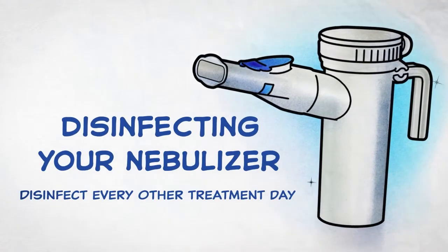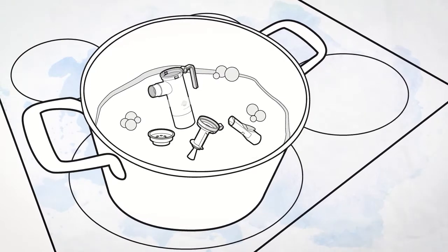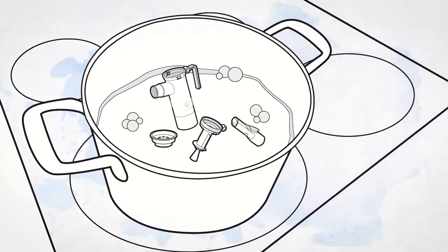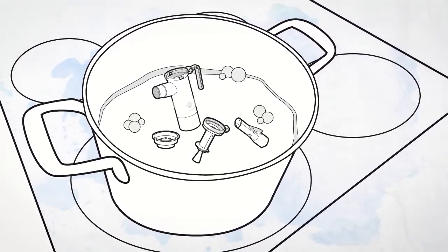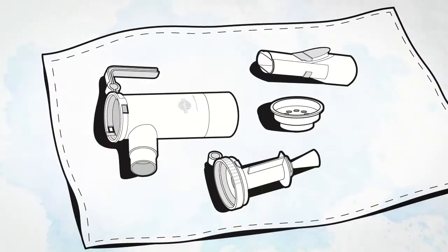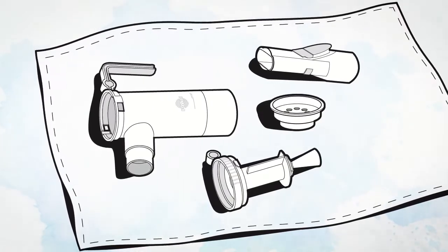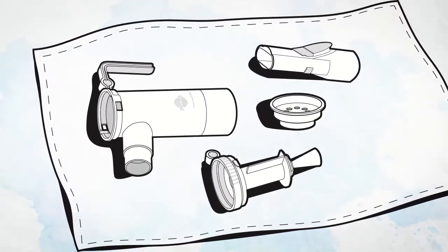Disinfecting your PARI Reusable Nebulizer: The PARI Reusable Nebulizer parts, except tubing and mask, can be disinfected by boiling them in a clean pot of water for a full 5 minutes. Dry parts on a clean, lint-free cloth. It only takes a few extra minutes to keep your PARI Reusable Nebulizer working properly.